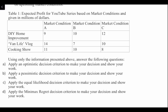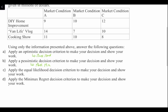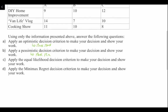Let's define some keywords. The optimistic decision criterion is called the maxi-max — we're finding the alternative that maximizes the maximum outcome for every alternative. The pessimistic decision criterion is also known as the maxi-min — we find the alternative that maximizes the minimum outcomes for every alternative. The equally likely decision criterion finds the alternative with the highest average outcome. The mini-max regret decision criterion minimizes the maximum regret.